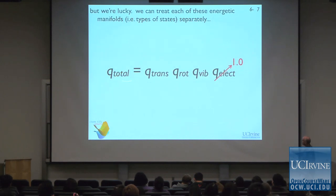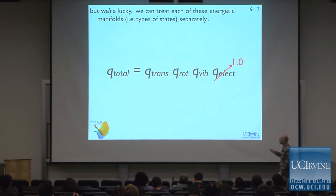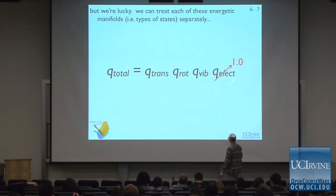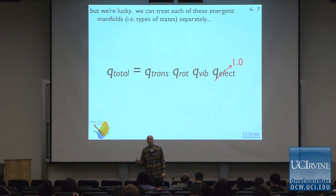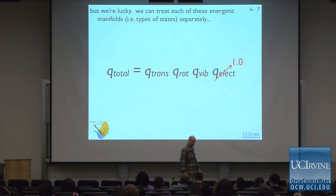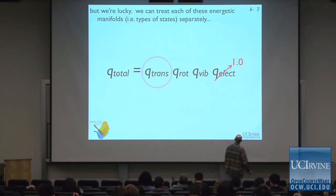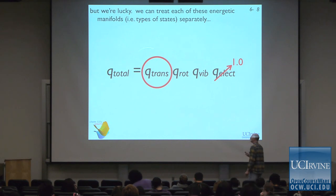We're fortunate that we can decouple these various degrees of freedom and express the total partition function for any molecule as a product between them. We're going to make the assumption that the partition function for the electronic degrees of freedom is just one — there's only one thermally accessible electronic state. Now we'll focus on the translational partition function, which is what we did on Wednesday.